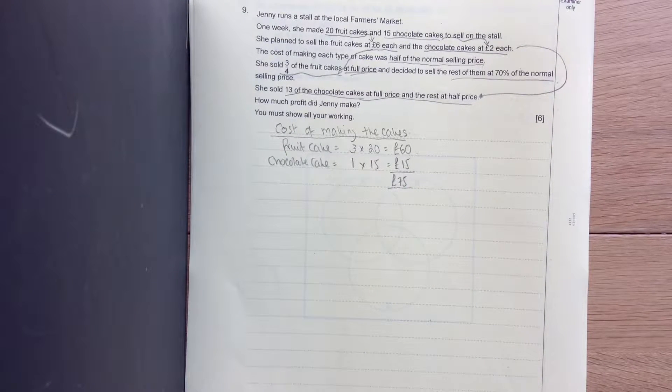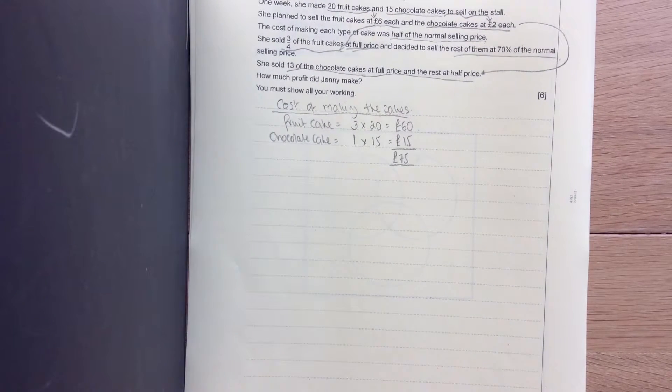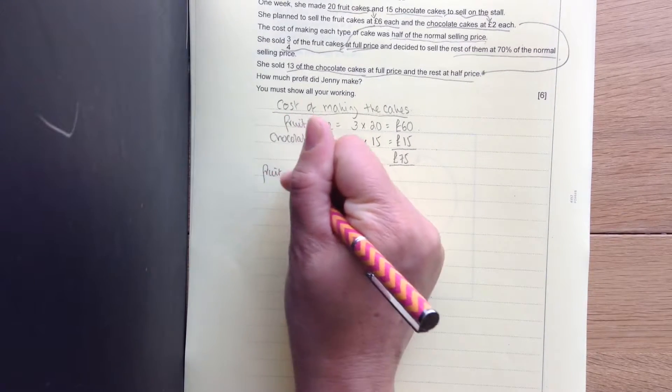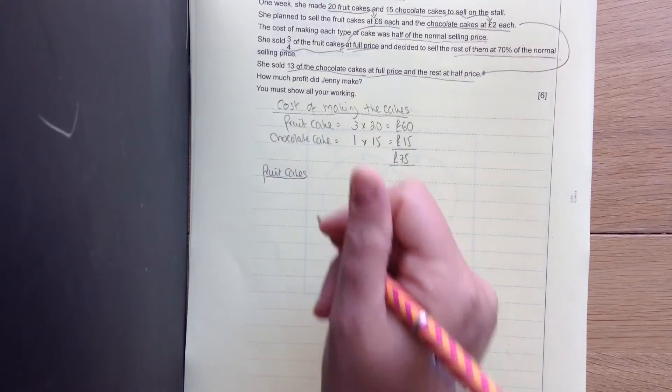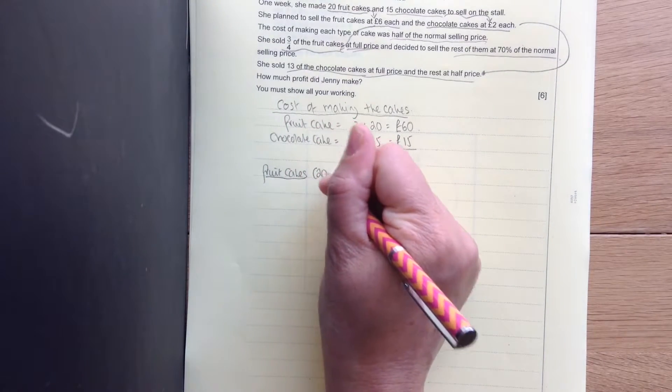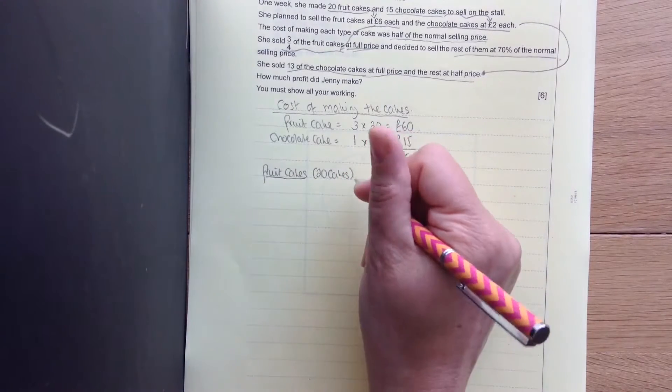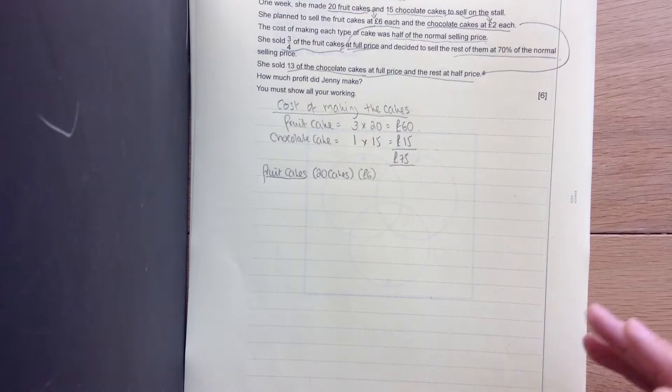So that's the first part then. Now we're going to look at the profits involved with selling them. Looking first of all at the fruit cakes. Remember now, we had 20 cakes. I remember that each cake was £6.